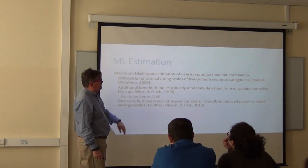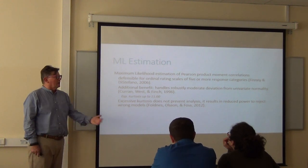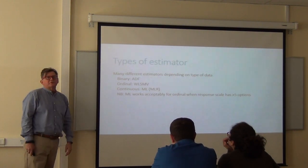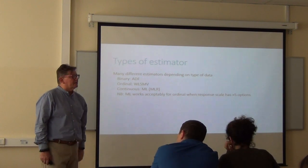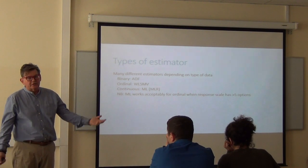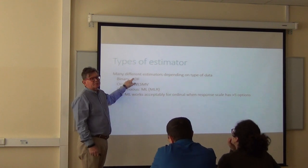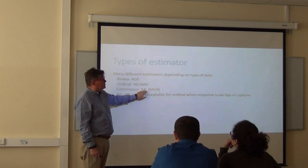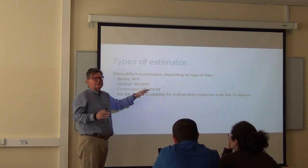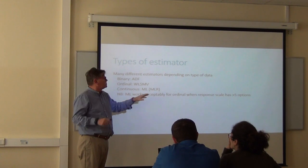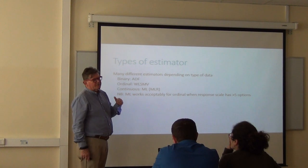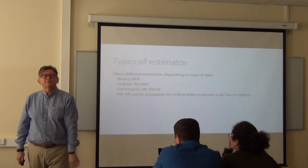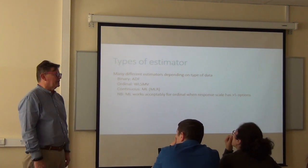Estimation methods: we focused on maximum likelihood on the assumption that variables are sufficiently continuous to be analyzed that way. It does all this wonderful stuff, but the world isn't always continuous and maximum likelihood is not always the answer. Finney and DiStefano in 2006 said that ML is defensible for ordinal rating scales of five or more categories. There's an additional benefit of ML — it handles robustly moderate deviation from univariate normality, even up to kurtosis of 11, according to Curran, West, and Finch. Excessive kurtosis does not prevent analysis; it results in reduced power to reject wrong models.